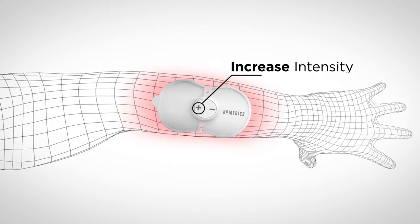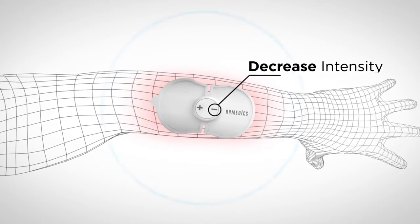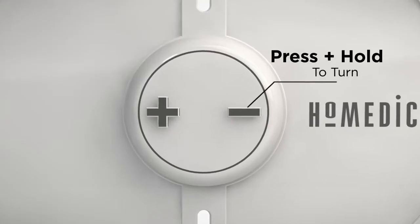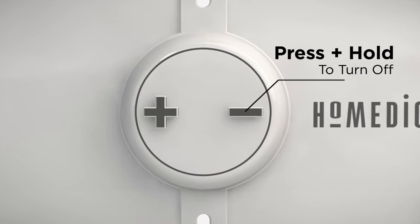By pressing the plus or minus buttons, you'll be able to adjust the device to your desired intensity so that you're always comfortable. To turn the unit off, press the minus button and hold for three seconds.